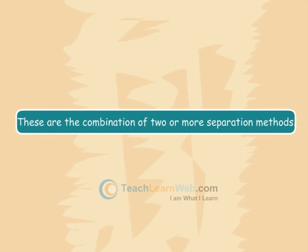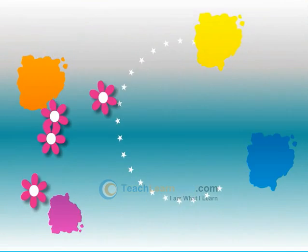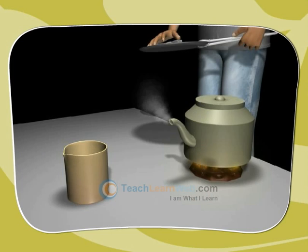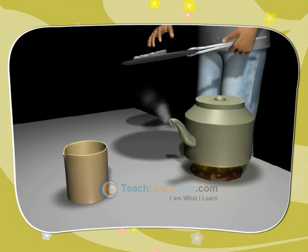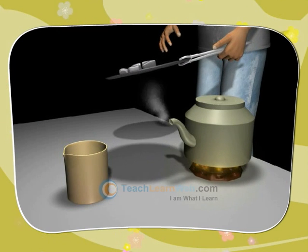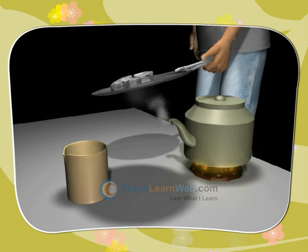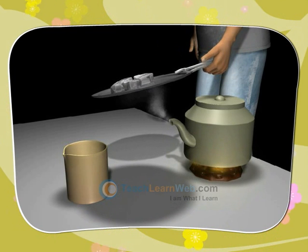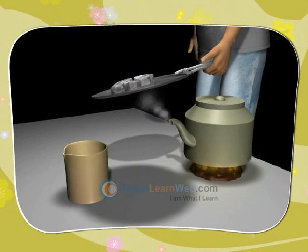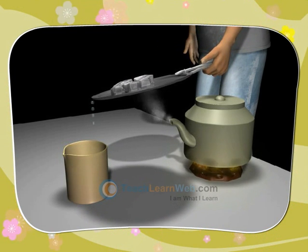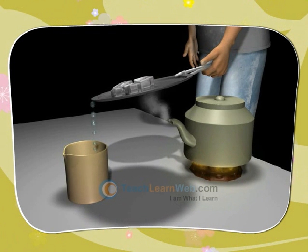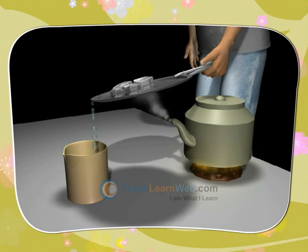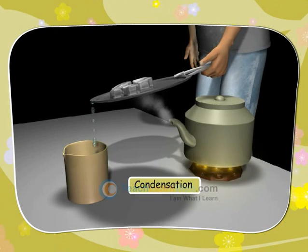Multiple separation methods are combinations of two or more separation methods. For example, when a metal plate with ice is held over steam coming from a kettle, the steam condenses and forms liquid water. This process of conversion of water vapor into its liquid form is called condensation.